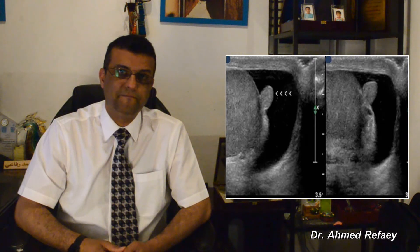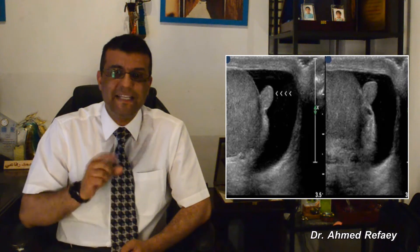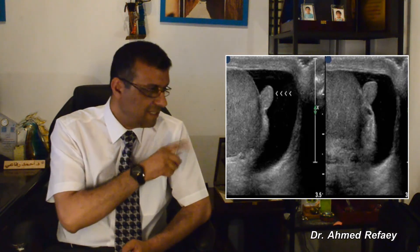Coming to the third cause of acute scrotal pain, which is torsion of the appendix of testes. The appendix of testes is a remnant of the Müllerian duct, located at the superior lateral aspect of the testicle in the form of an oval cystic structure between the superior pole of the testes and the epididymal head. It is generally not visible unless surrounded by marked hydrocele.